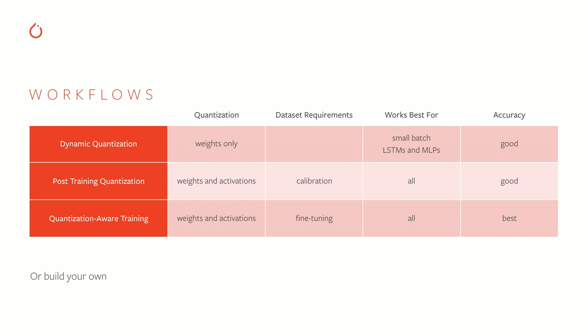Post-training quantization is a technique which converts both weights and activations on an already trained model to lower precision. It usually requires access to a representative dataset to estimate the ranges of activations flowing through the network. It often gives you good accuracy, especially for common CNNs, while providing good performance throughput. If you really want to preserve the best accuracy, there are techniques called quantization-aware training, which effectively simulates a precision drop as part of model training or fine-tuning, allowing the model to learn around potential inaccuracies and reduce the accuracy drop. It's important to highlight that those workflows are only suggested examples, and you can always build your own from the low-level components PyTorch provides.